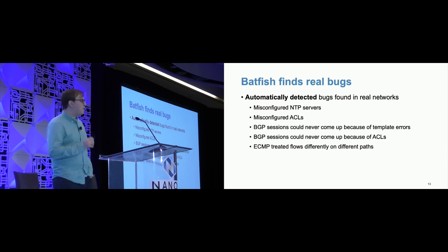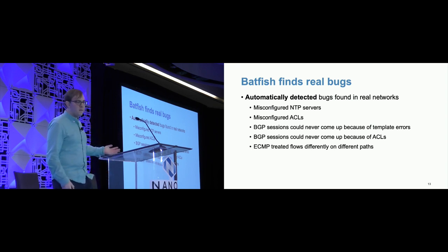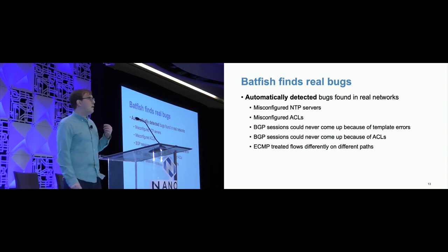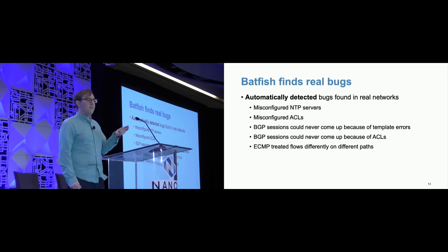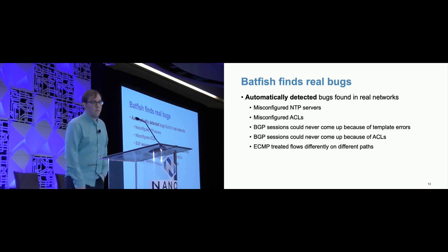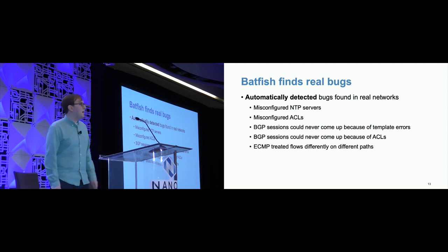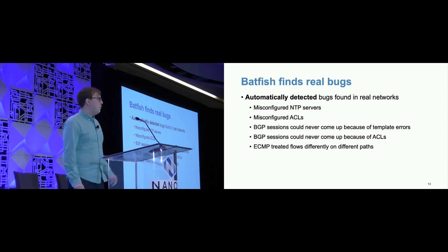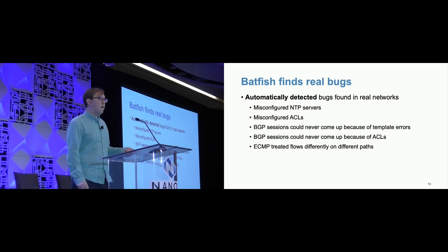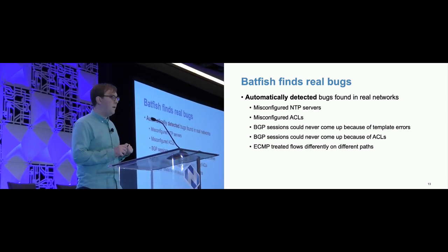Batfish finds real bugs in real networks. Our users have automatically detected bugs including misconfigured ACLs — in one case, they were mixing IOS and ASA masks in their ACLs and thought they were allowing a single IP but were actually allowing all. It's hard to notice when things fail open because everything still works. We've found configuration bugs where BGP sessions couldn't come up because the two sides weren't configured compatibly, or because an ACL in the middle was blocking them. We've also found multipath inconsistency where with ECMP in the network, flows have different dispositions — some fail, some succeed — based on path taken.